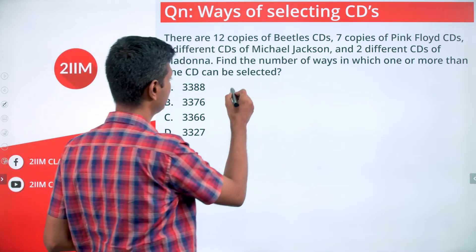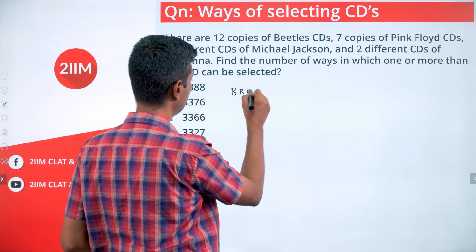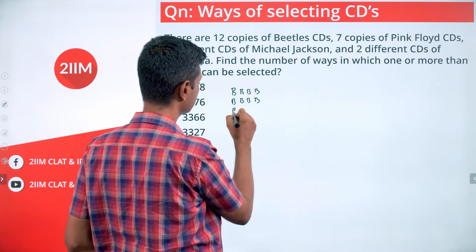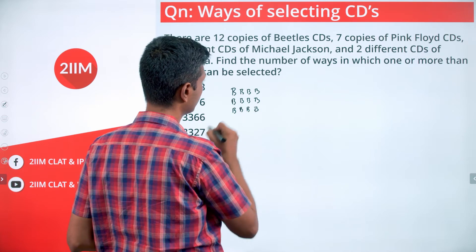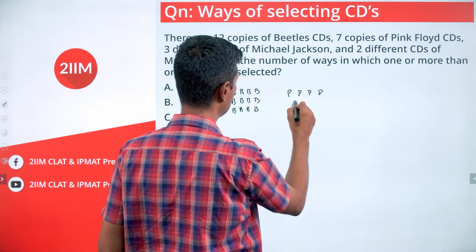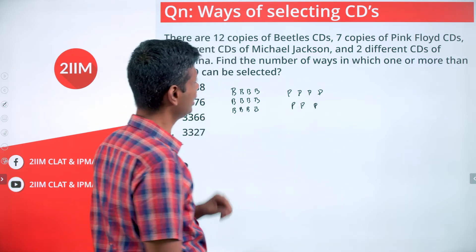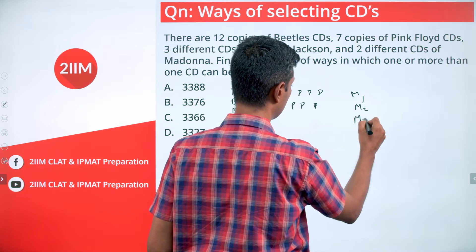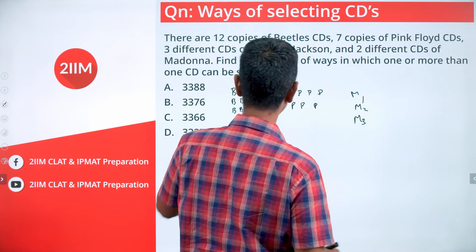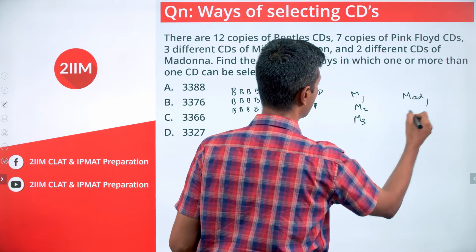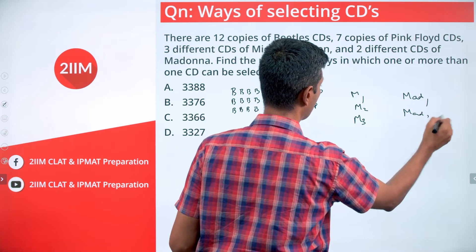We have 12 copies of Beatles CDs, so B, B, B, B - 12 of these. 7 of Pink Floyd, P, P, P, P. 3 different CDs of Michael Jackson: M1, M2, M3. 2 different CDs of Madonna: M81, M82.